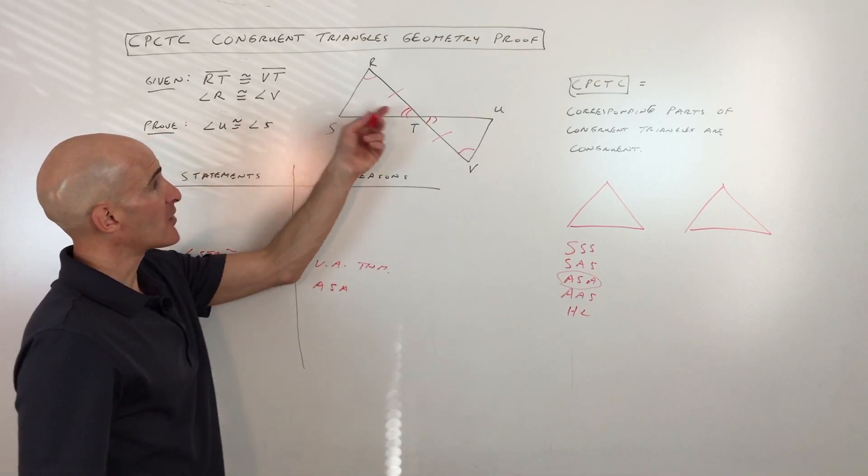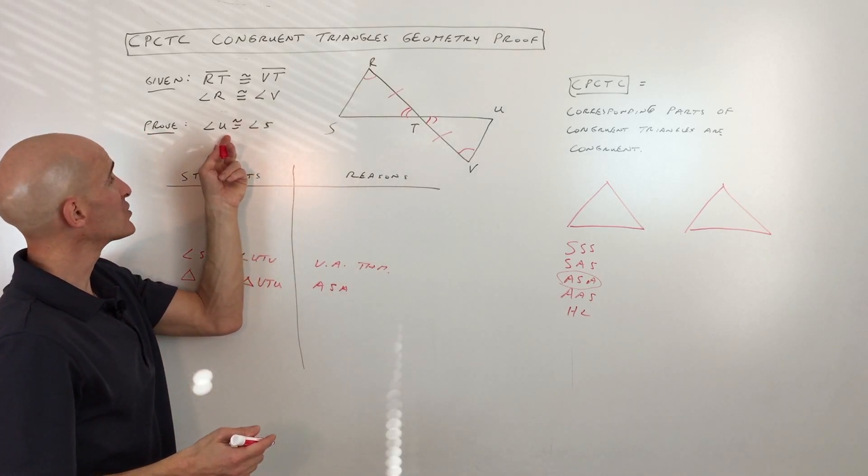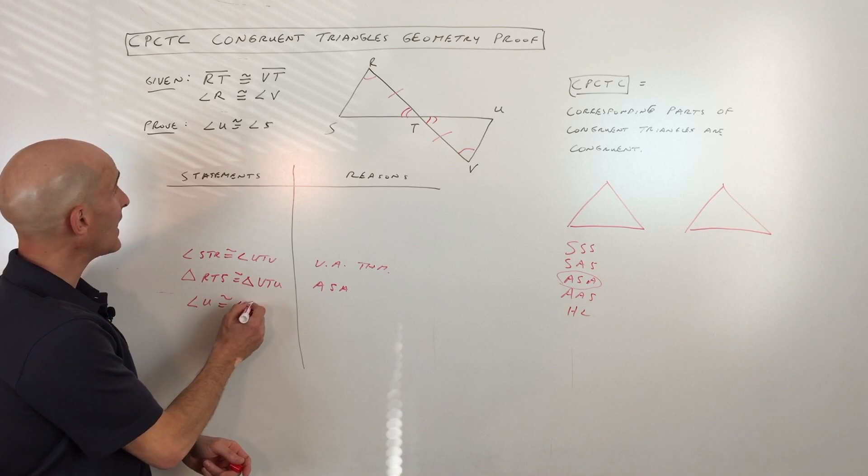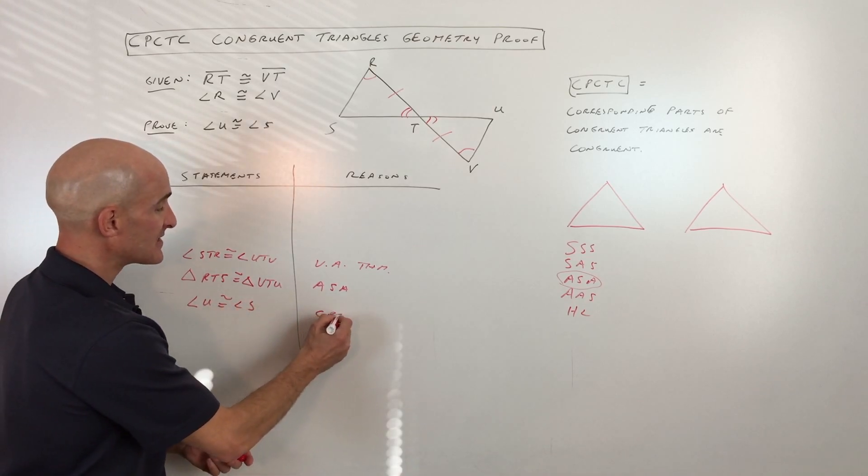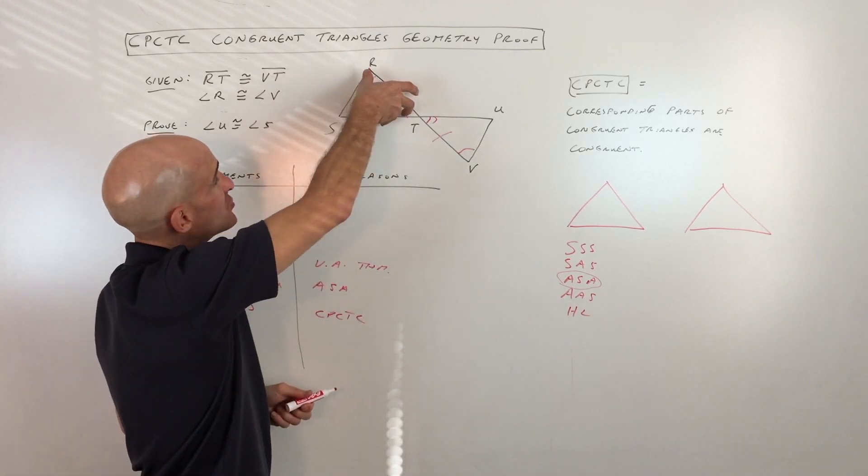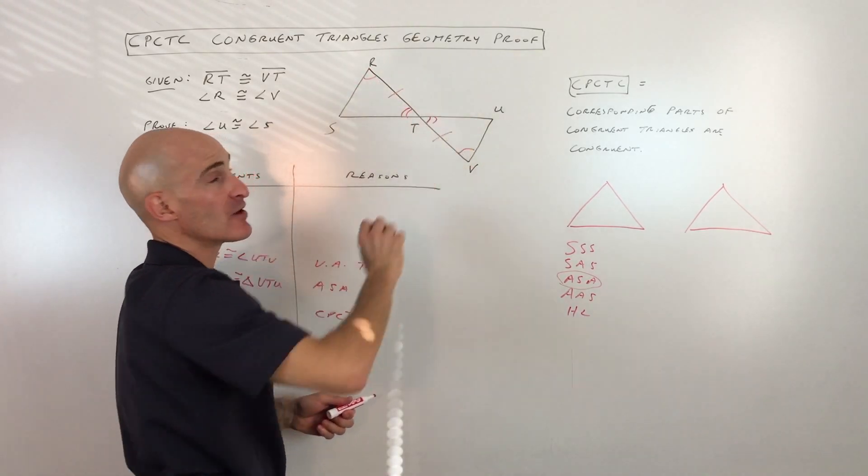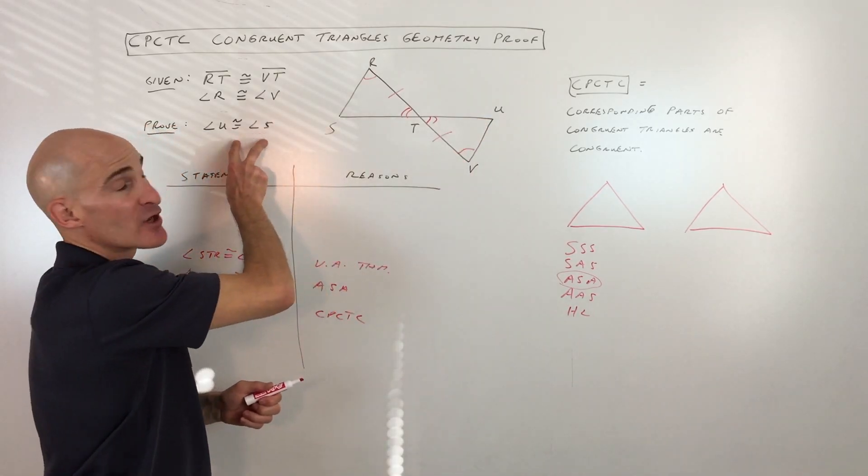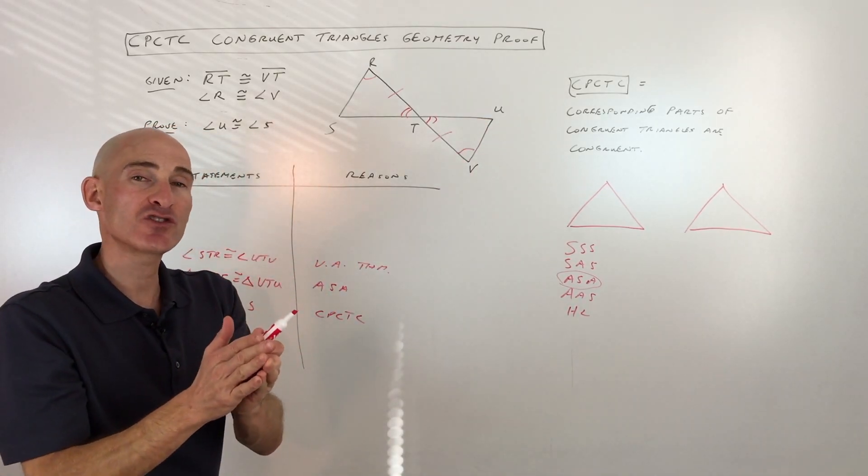Okay, now that we know that the triangles are congruent, we can go to our last statement, which is what we're trying to prove. If we take this triangle, we rotate it, everything that matches up, you can see angle S is going to match up with angle U. Those are going to be congruent as well because we've already proved that the entire triangles are congruent.